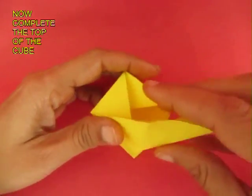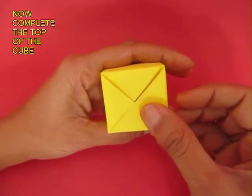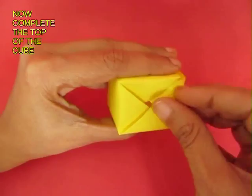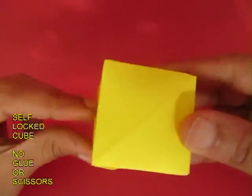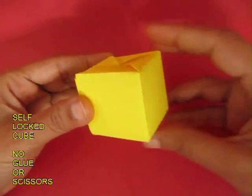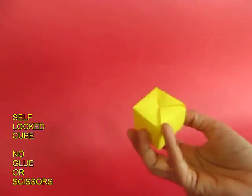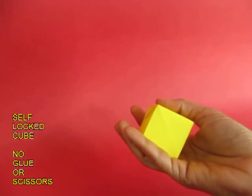Keep folding the triangles and ultimately you will be left with one triangle which again you tuck inside. This becomes a very beautiful self-locked cube where you don't need to use any scissors or glue, and of course you can play with it like a ball.